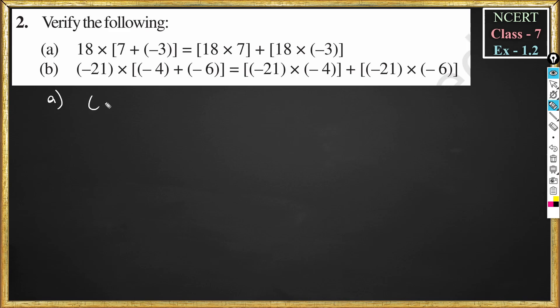So we have LHS is equal to 18 into 7 plus minus 3. So this becomes 18 into 7 plus of minus 3 is minus 3. This is equal to 18 into 7 minus 3 is 4. So 18 into 4 is 72.